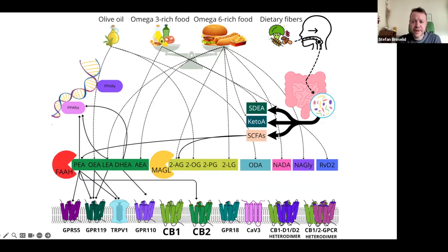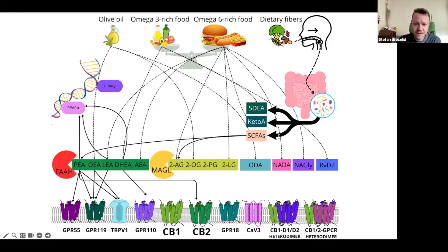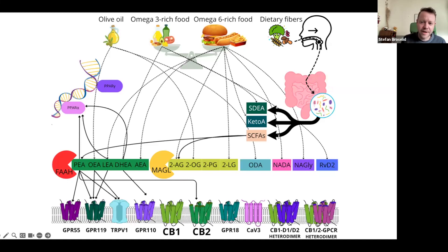Now let's look at the pharmacology of anandamide's congeners — the other N-acyl ethanolamines. These compounds, including PEA, OEA, LEA, and DHEA, are derived from dietary sources rich in omega-3, omega-6, omega-9, and saturated fatty acids. They interact with multiple receptors including GPR-55, GPR-119, TRPV1, and CB2. And unlike anandamide, which activates PPAR-gamma, these congeners primarily activate PPAR-alpha. PPAR-alpha plays a crucial role in glucose metabolism, inflammation, and overall metabolic regulation.